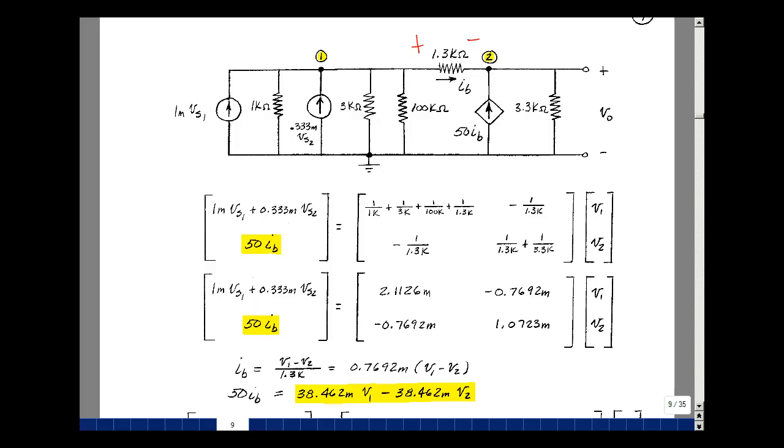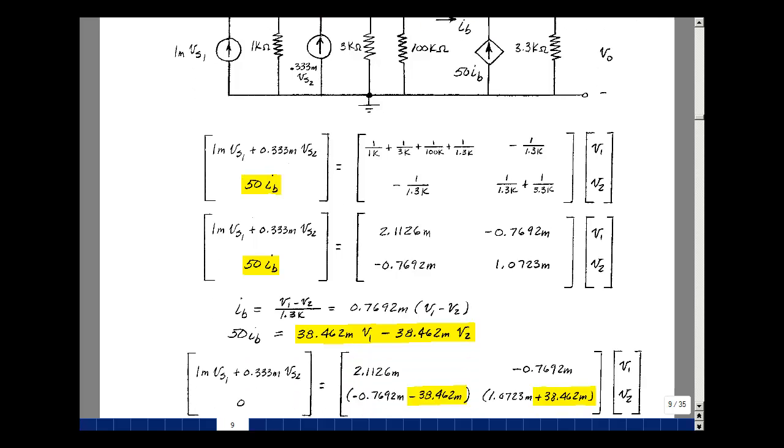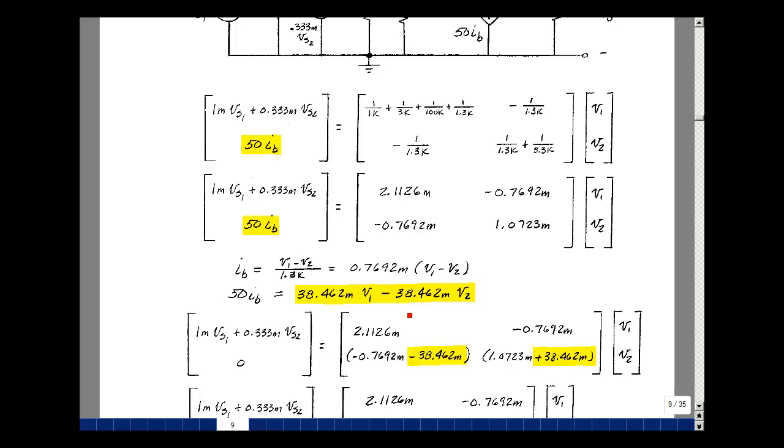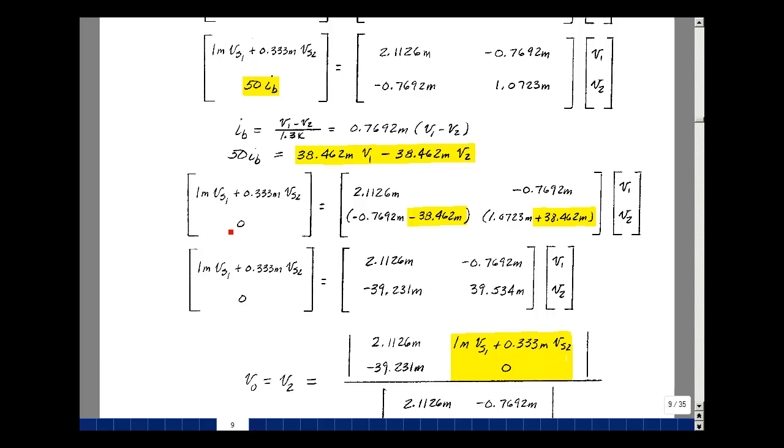But what is i sub V? It's just simply node voltage 1 minus node voltage 2 divided by 1.3k. I'm going to multiply that by 50 and bring it over on the other side of the equation. So let's take this ratio and multiply it by 50. Take the reciprocal here and get 0.7692 milli, and then multiply that by 50. I've got 38.462 milli times V1 and then minus the same value times V2. When you bring this on the other side of the equation, you're going to change the sign of these two terms.